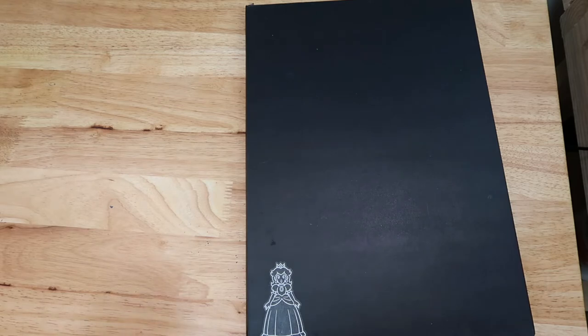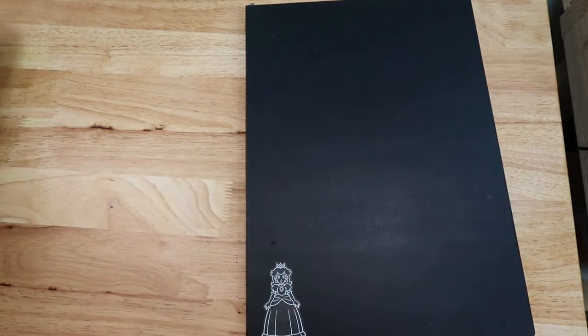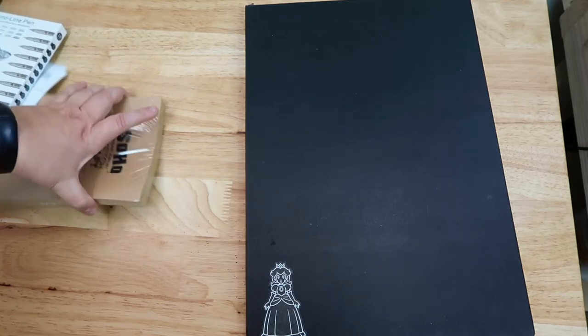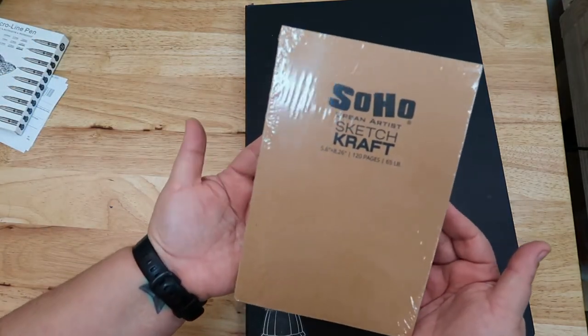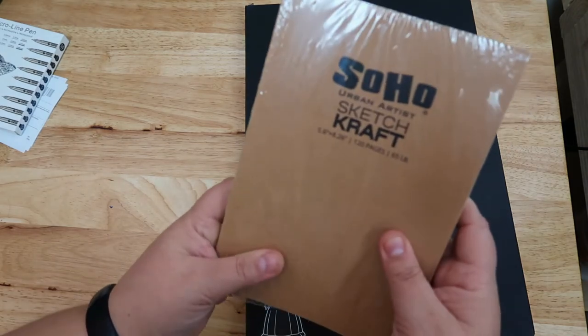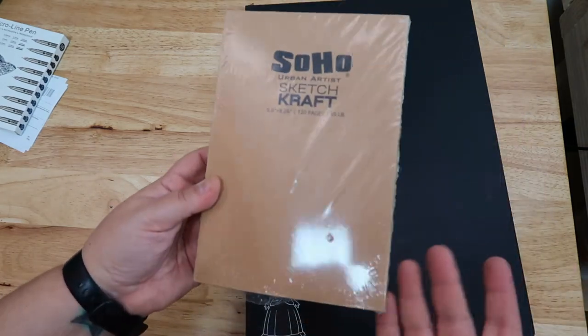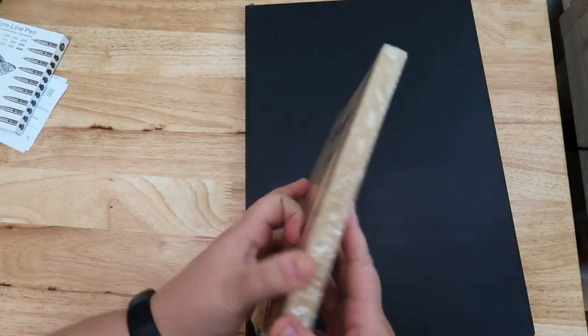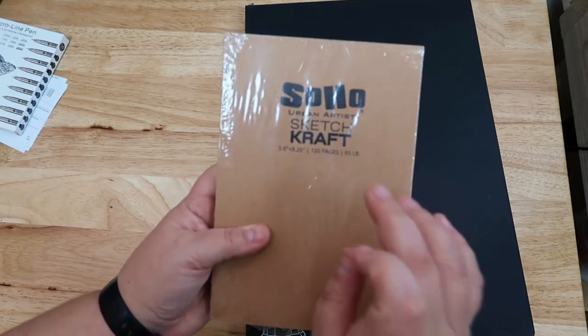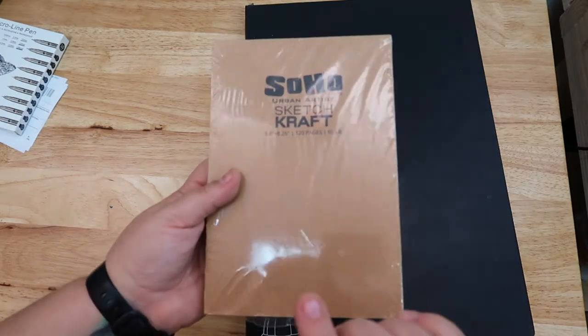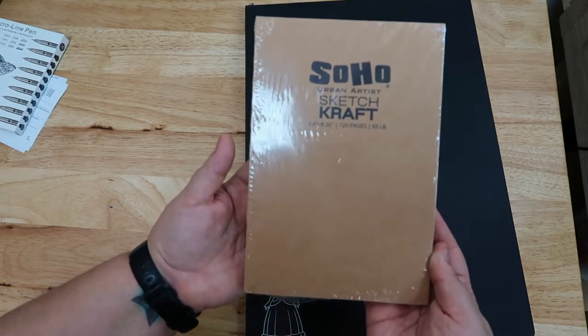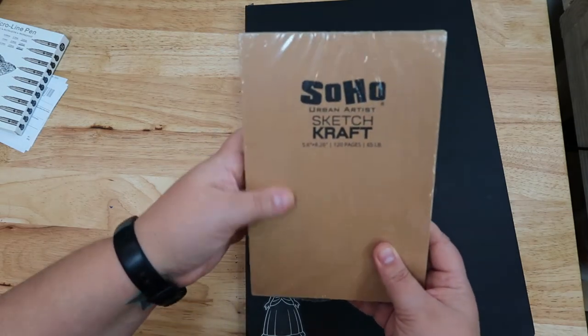I told myself that I would not get any more supplies this year, however I didn't consider people giving me gifts. A friend of mine, Luke, decided to give me a sketchbook for a gift exchange, so here's another sketchbook. I have not taken it out of the plastic. It is five and a half by eight and a half, 120 pages, 65-pound paper—probably pretty thin. I do like drawing on brown paper, so this one will be really interesting when I decide to open it up.